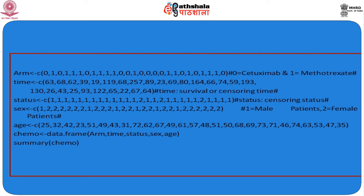This time variable is basically the follow-up observation of each patient. The third variable, status, is given as 1 or 2: if the patient is censored it is given as 1, otherwise 2 for patients who died. The sex variable is 1 for male and 2 for female. Age at the time of study initiation is recorded in years — such as 25, 32, 42, 23. All five variables are combined into a data frame assigned as the chemo database. Calling summary on chemo provides descriptive statistics for all five variables.